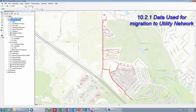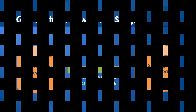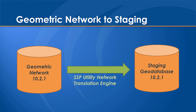Before we jump into that, let's talk a little bit about how this process will occur. The first stage is that we're actually utilizing the geometric network at 10.2.1 through an SSP utility network translation engine. This engine is effectively a batch app that's very configurable down to the nth degree, and it will take the data and move it into a staging geodatabase, which is very important because we're going to do some quality assurance there.